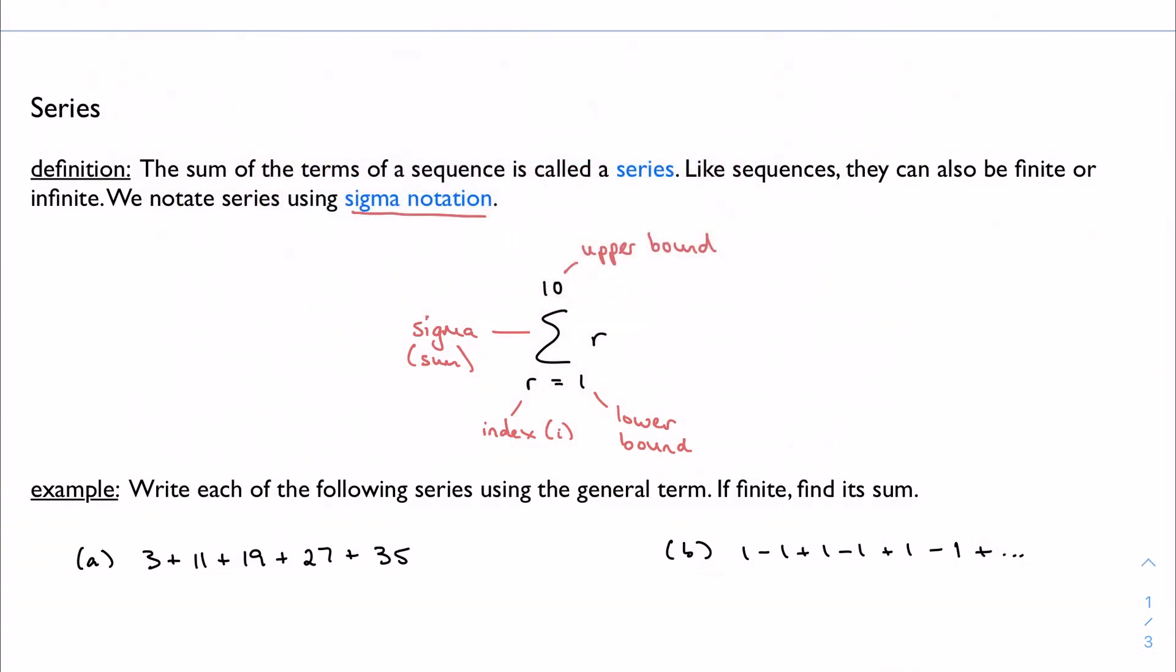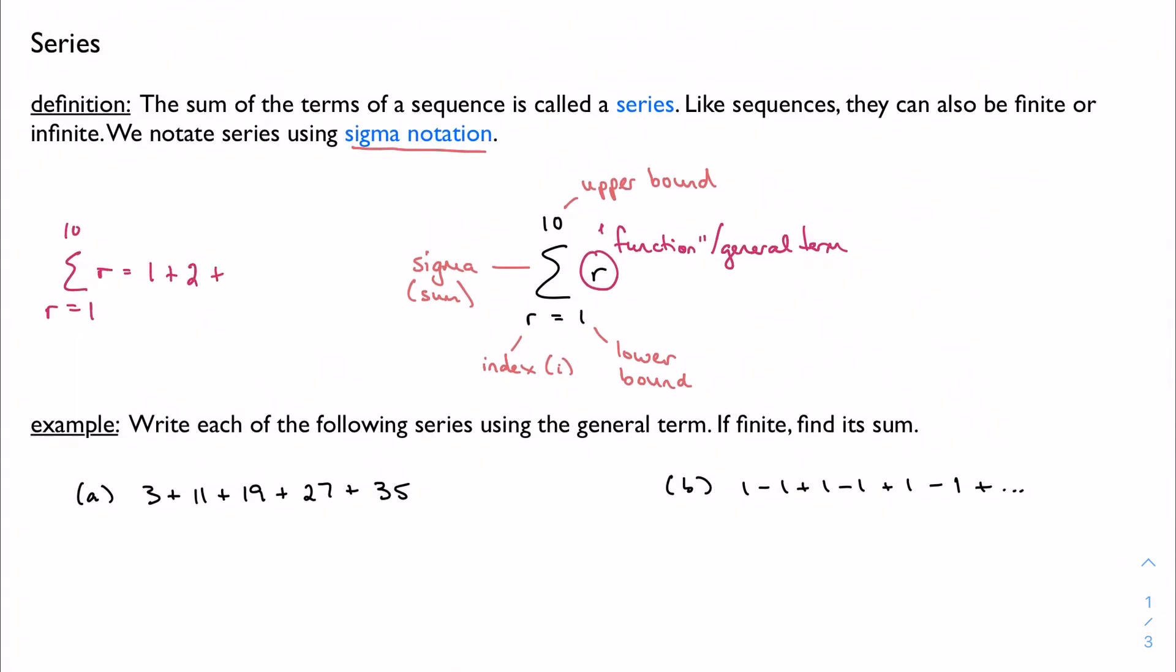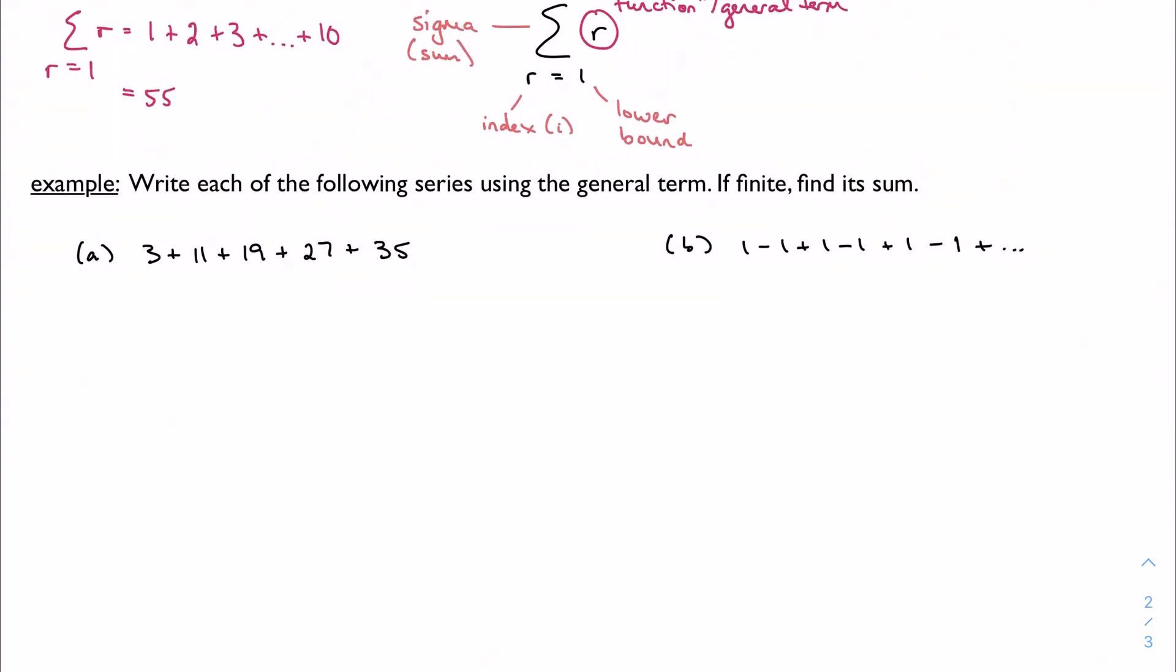And then here, my general term. It's my general term, so if I were to expand this series. Well, when r is 1, my general term is 1. And then 2, and then 3, and then so on all the way up to 10, and that's going to equal 55. So we know how to add these together now. We just add up all the terms. And we're going to do the same practice that we just did. We're going to write each of the following series using the general term. If it's finite, find its sum.